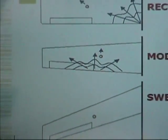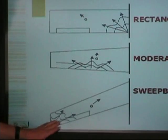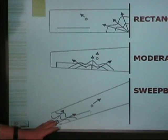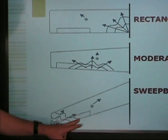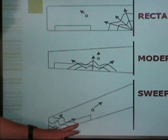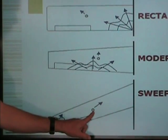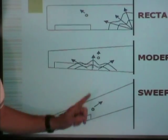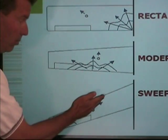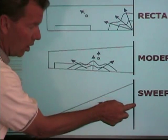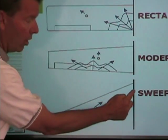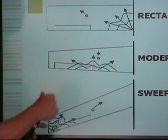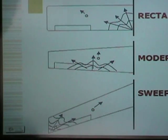What about a swept wing? On the swept wing, you're going to get boundary layer separation out at the tip first, typically. Notice that ailerons are certainly going to be affected, and the center of pressure is moving inboard and forward. As it moves inboard and forward, it's moving forward at an even greater longitudinal ratio compared to the rectangular wing.